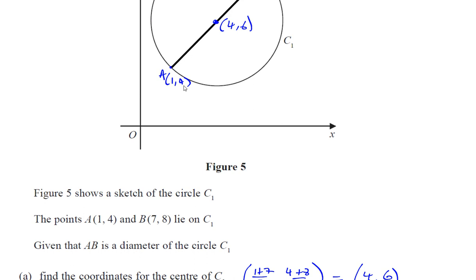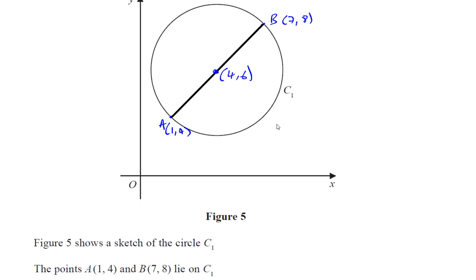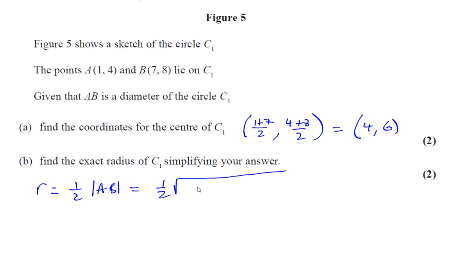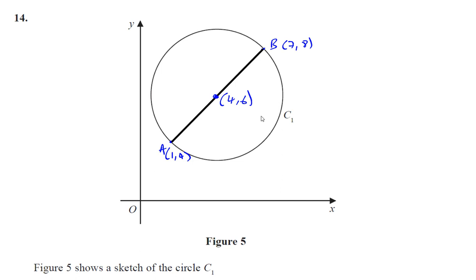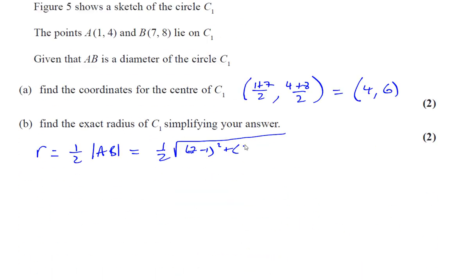The distance between A and B is going to be the change in the x, which is (7 - 1) squared, using Pythagoras' theorem, plus the change in the y, which is going to be (8 - 4), all squared. So the radius is a half times the square root of [6 squared, which is 36] plus [4 squared, which is 16]. So you're going to have a half times the square root of 36 plus 16, which is 52.